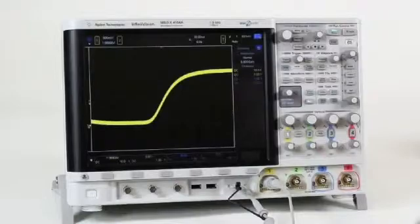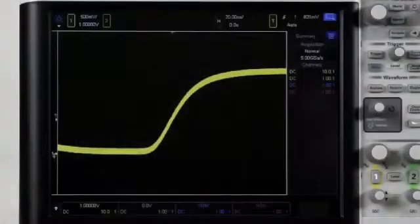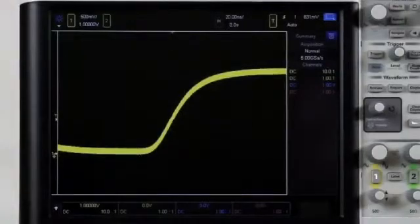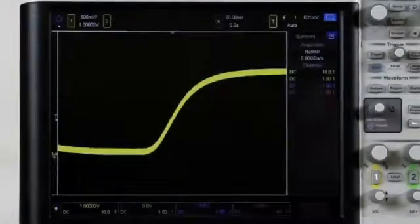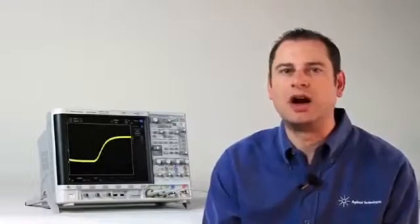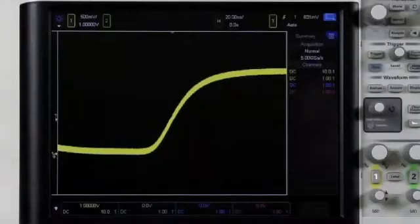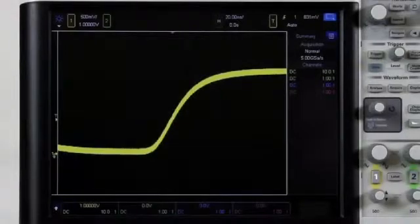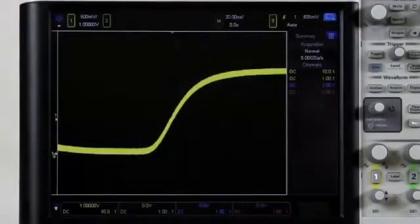One of the benefits of a very fast update rate like the 4000X's is it greatly increases your likelihood of capturing infrequent events. Infrequent events are so challenging to debug because by definition, they are rare. As you can see on the screen, we have a very intermittent glitch happening on our test signal.